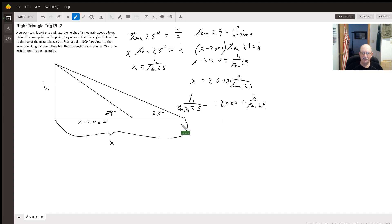So let's get our h's on the same side. I get h over tangent of 25 minus h over tangent of 29. Well, let's factor out our h. I get h times 1 over tangent of 25 minus 1 over tangent of 29 has to equal 2,000.